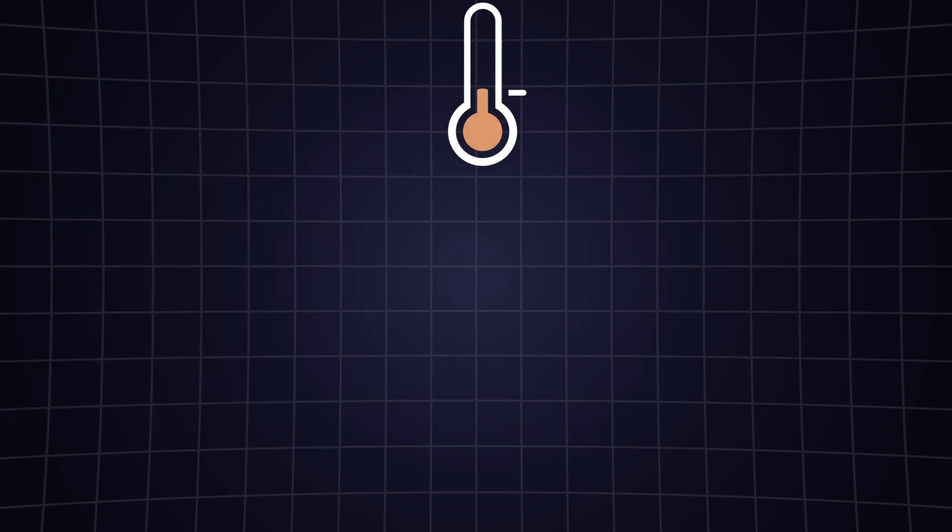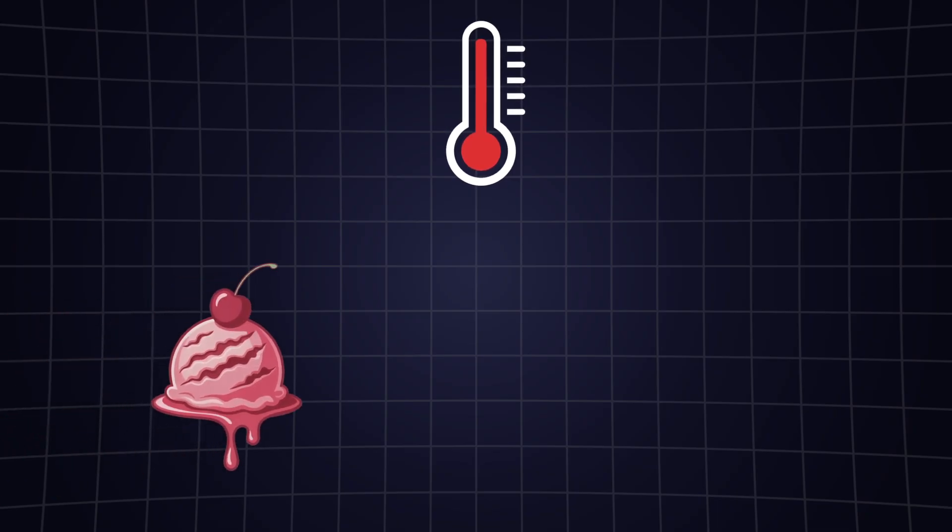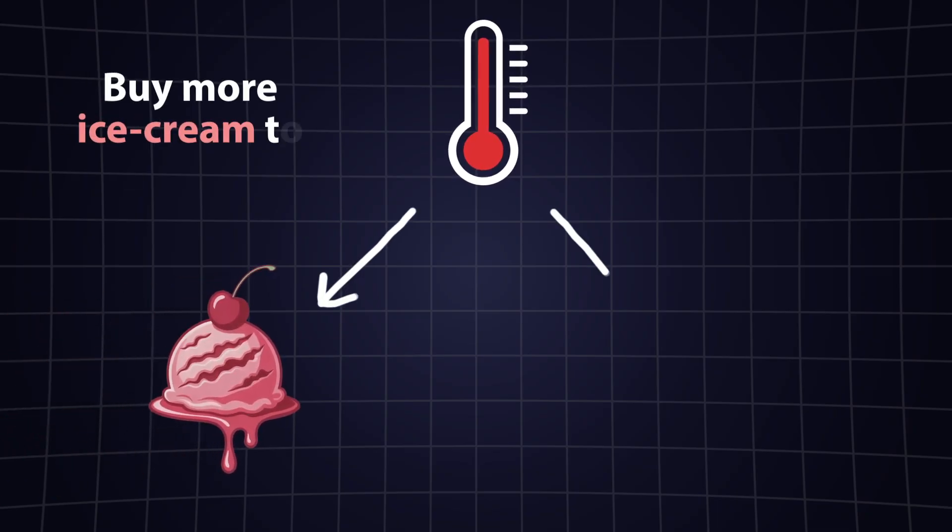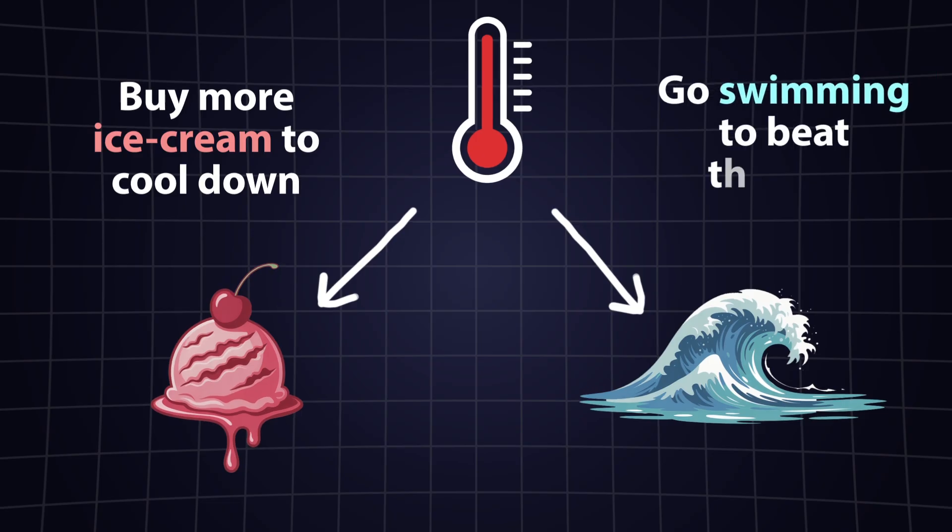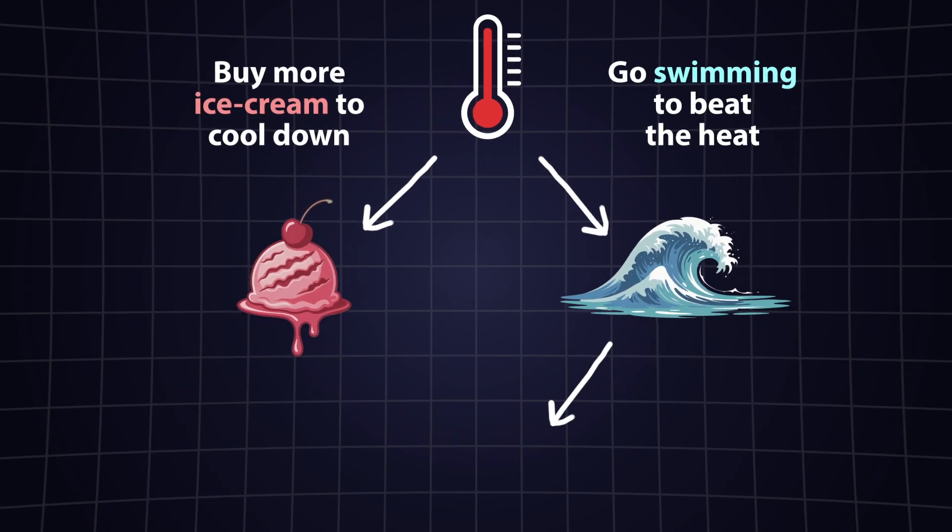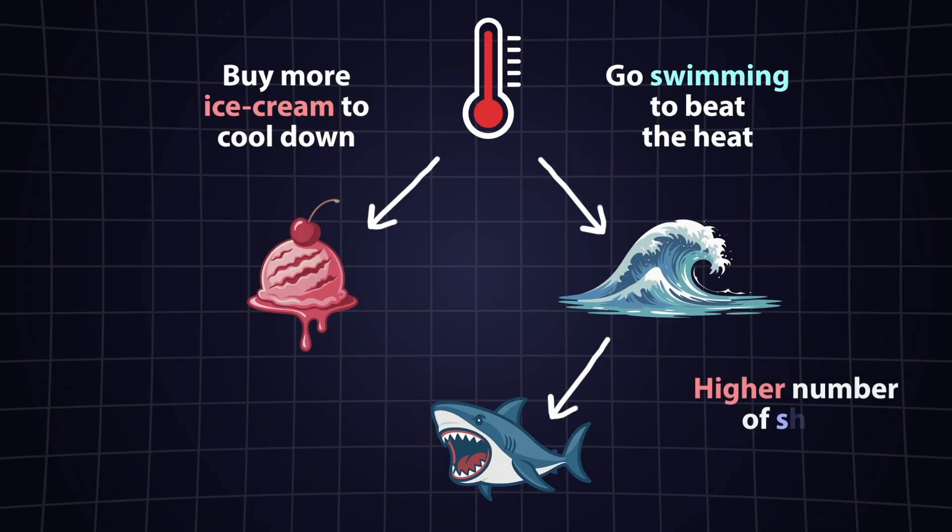For example, let's take temperature as our hidden factor. During hot summer days, people buy more ice cream to cool down, and more people go swimming in the ocean to beat the heat. Logically, the increased number of swimmers raises the chance of shark incidents.